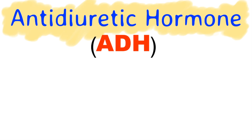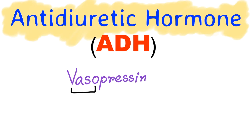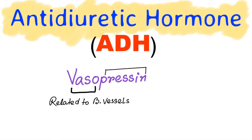Hey guys, today I am going to discuss about anti-diuretic hormone. It is also called vasopressin. Vaso means which is related to blood vessels and repressin means to squeeze something. So it is a vasoconstrictor hormone.